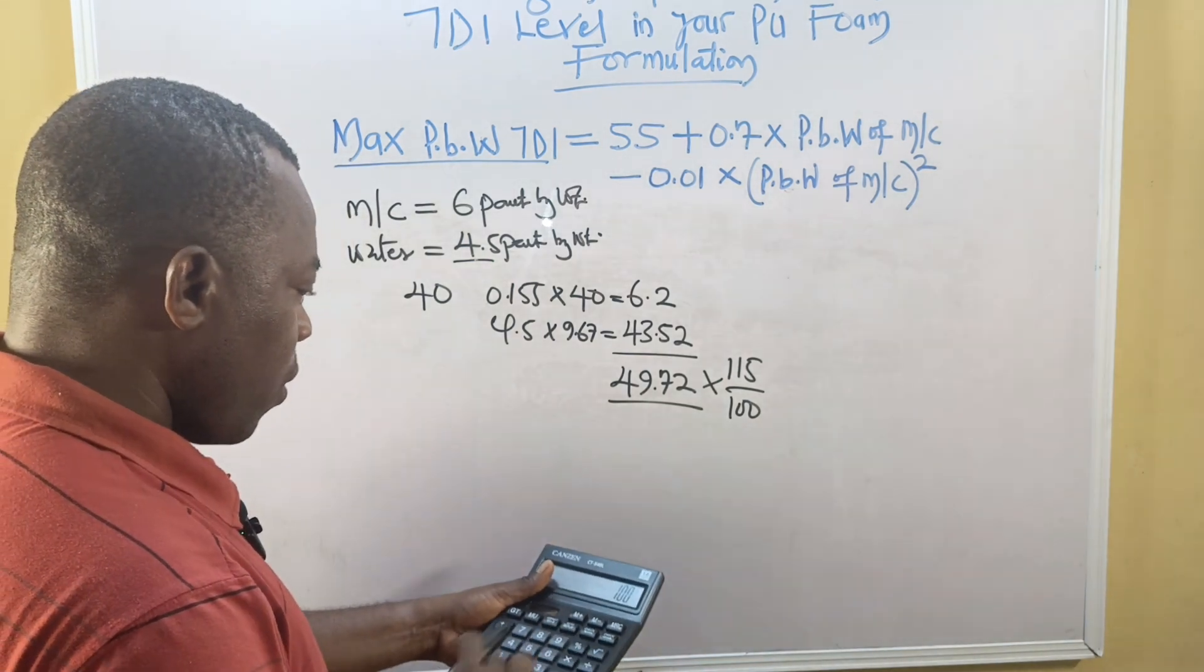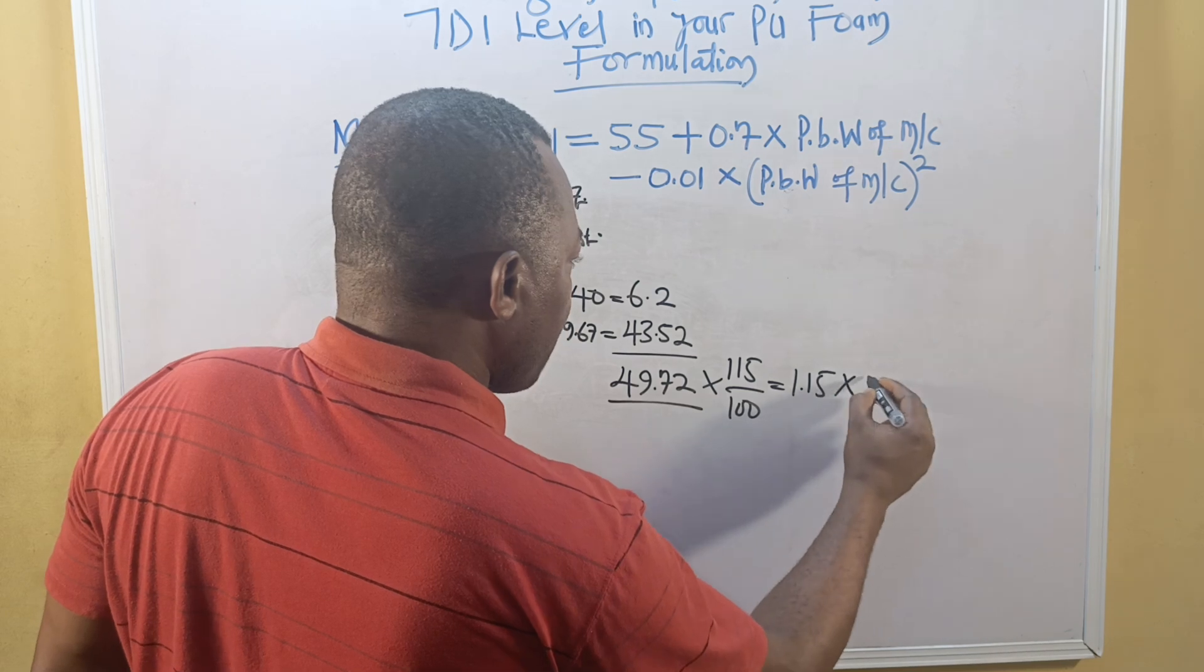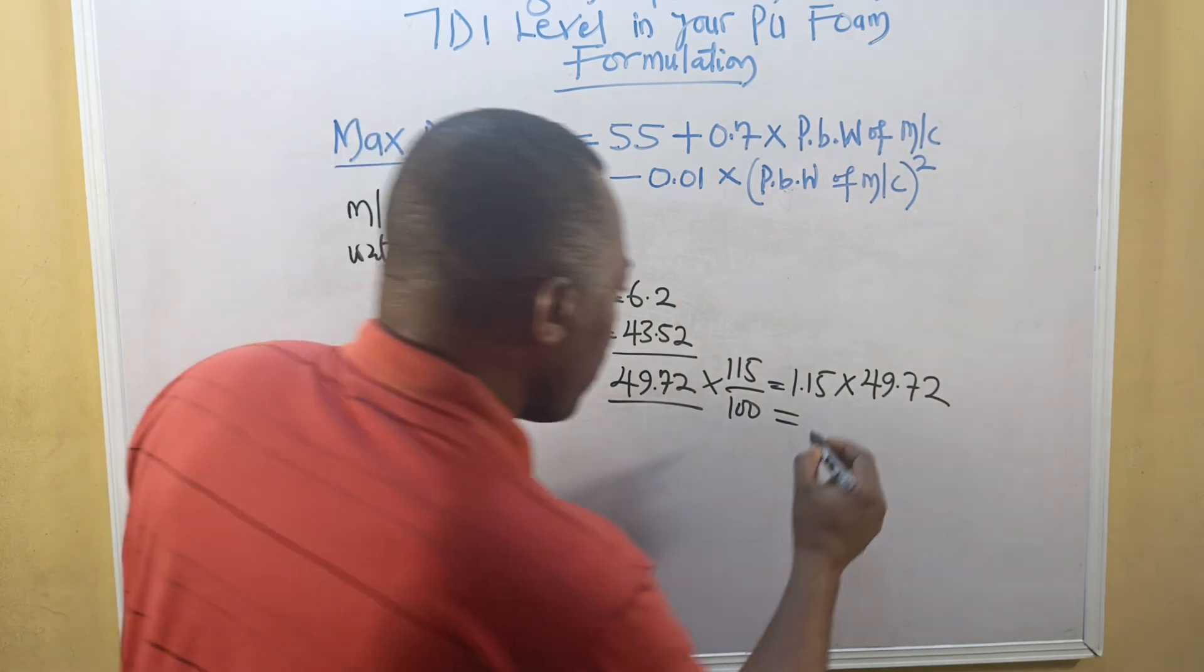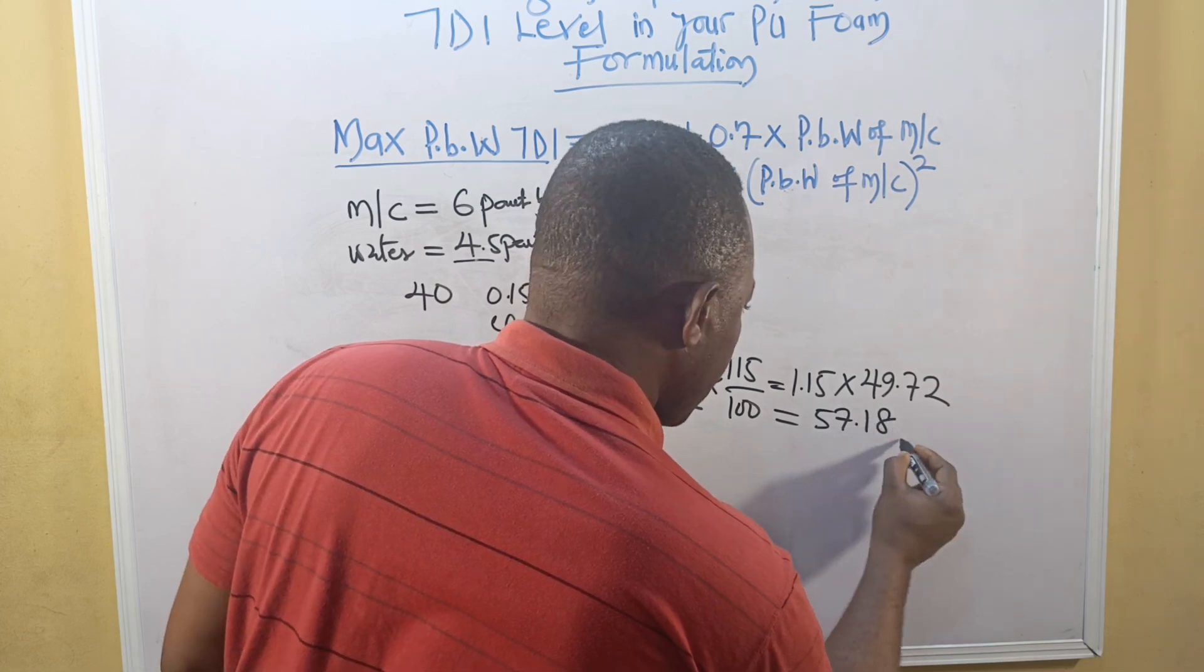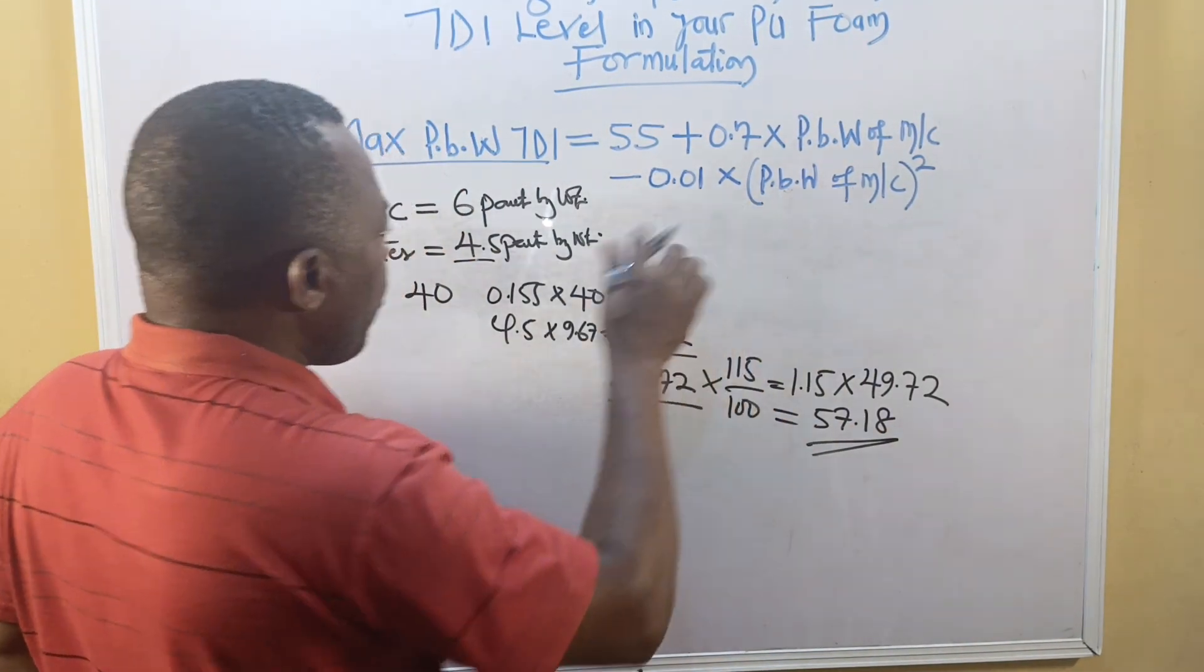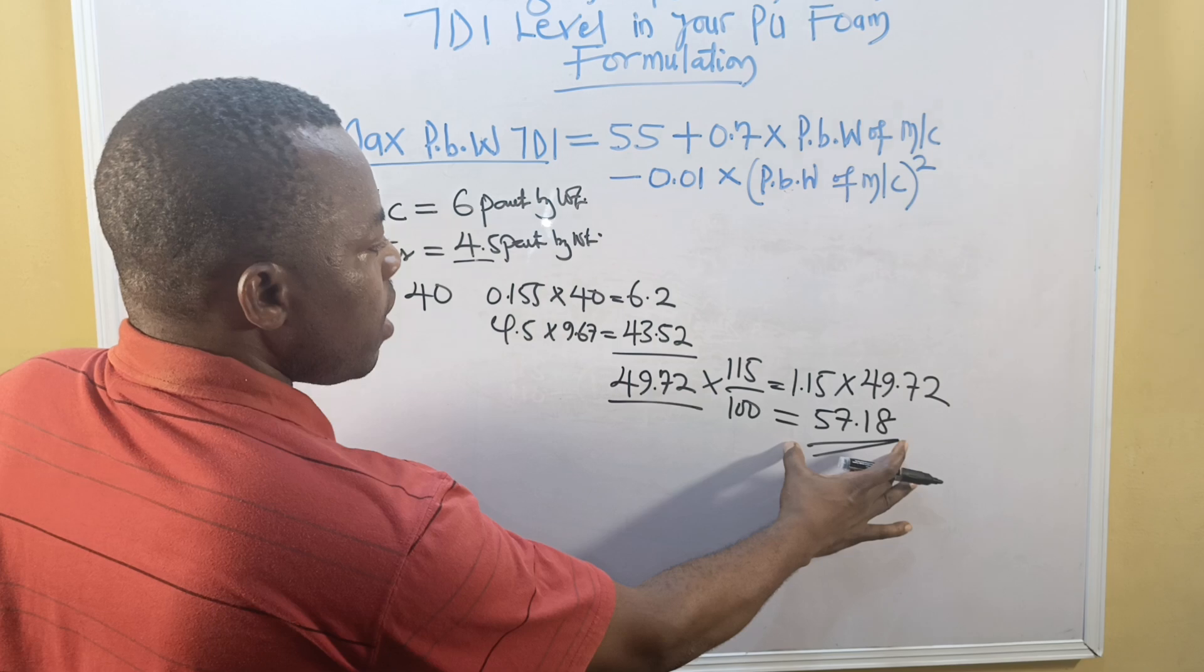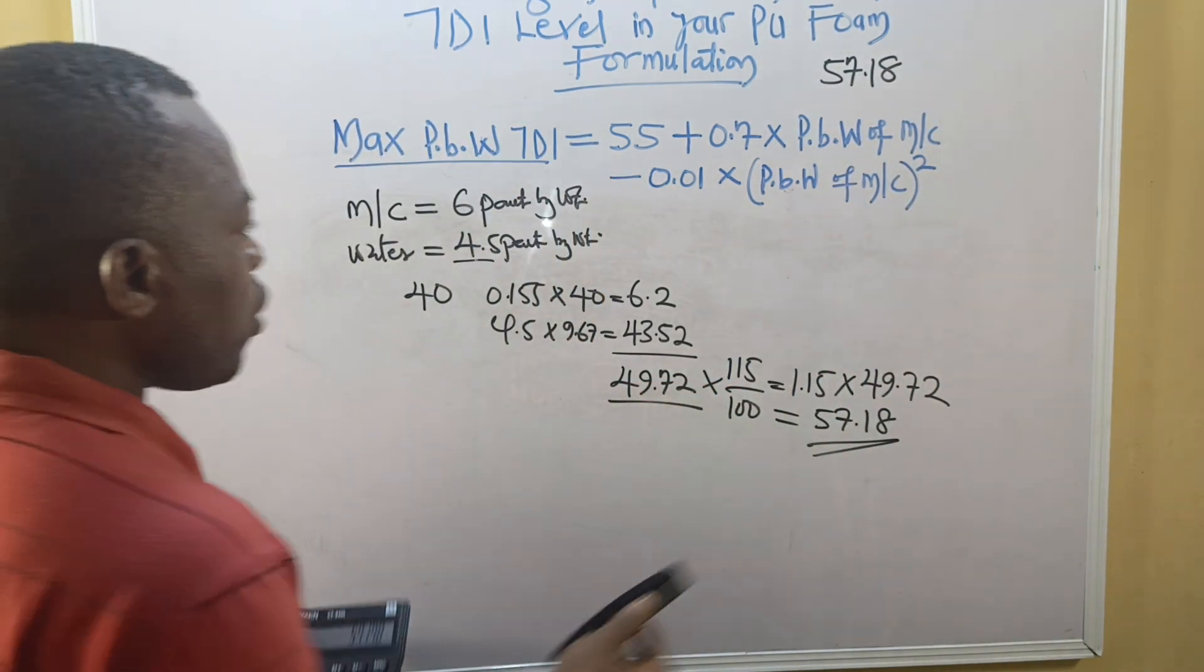As a professional, you want to choose your index. You want to increase it to improve the hardness of the foam. You say you take this and increase the index by 115 divided by 100. So 115 divided by 100 gives you 1.15. Multiply by 49.72, which gives you 57.18. This is the TDI that you want to use.